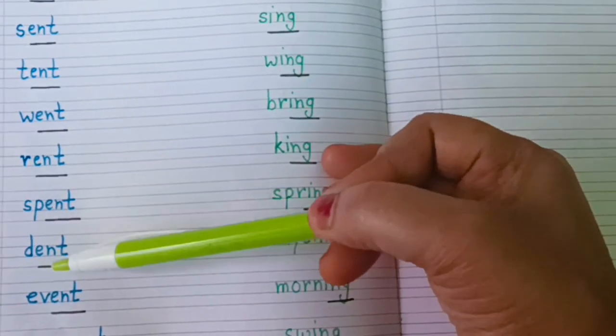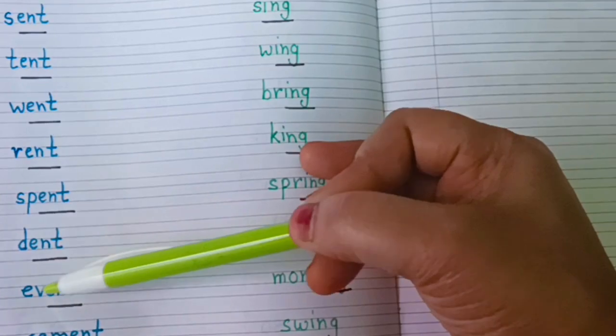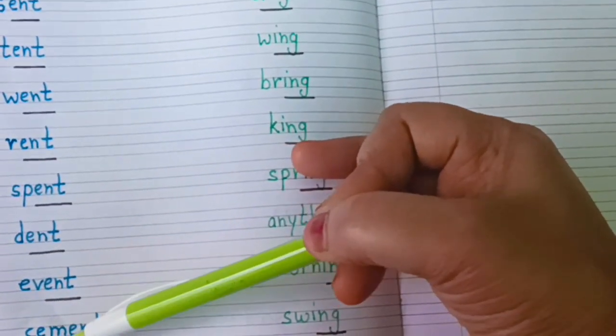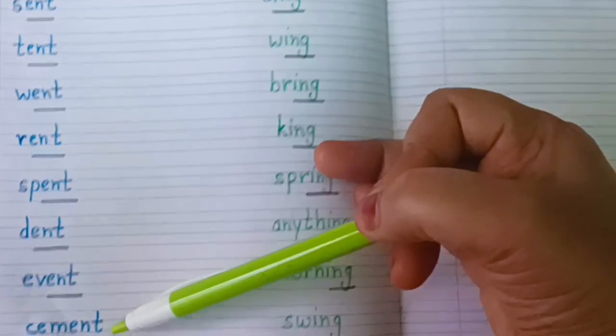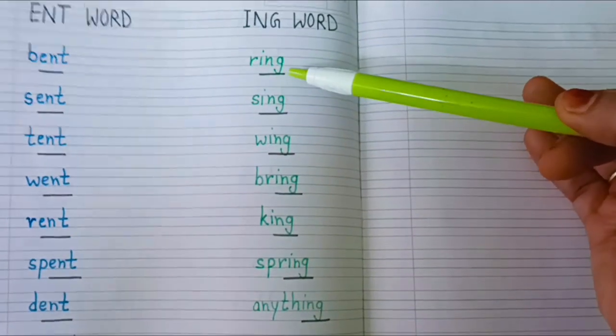D-ENT dent, EV-ENT event, CEM-ENT cement. Now let's see ING word. R-ING ring.